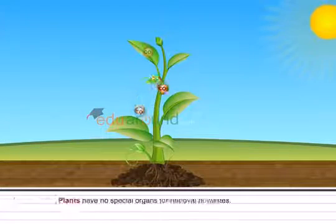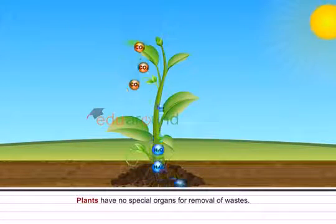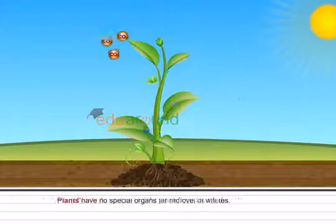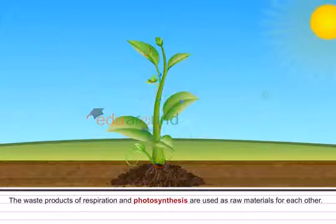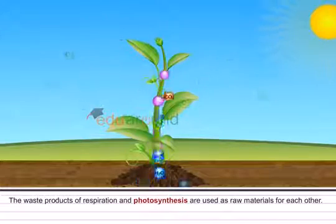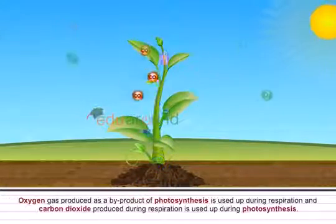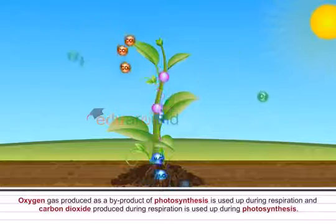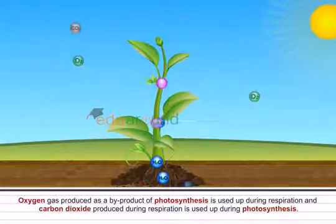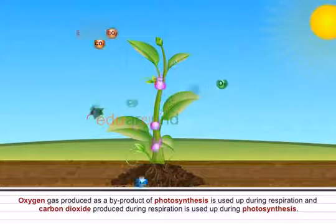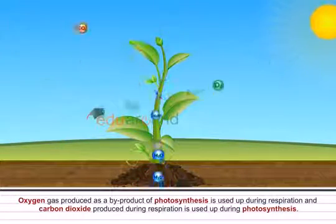Excretion in plants. Plants have no special organs for removal of wastes. The waste products of respiration and photosynthesis are used as raw materials for each other. Oxygen gas produced as a byproduct of photosynthesis is used up during respiration and carbon dioxide produced during respiration is used up during photosynthesis.